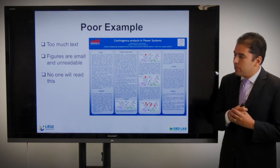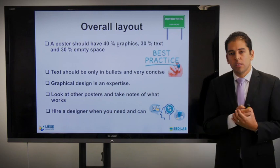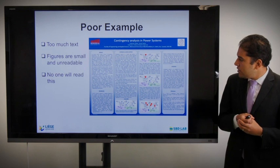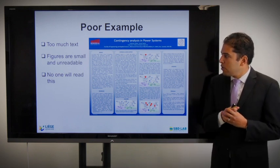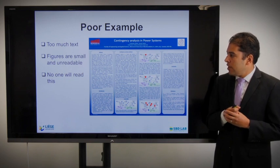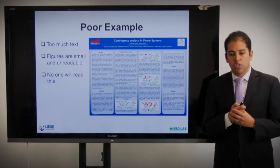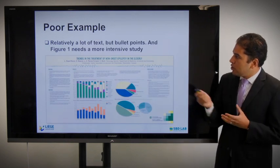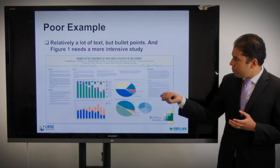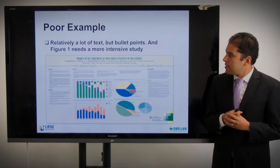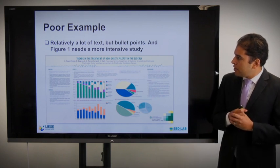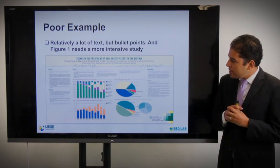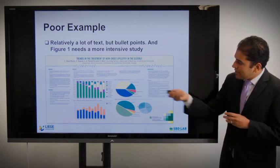This is a poor example — a lot of text, the structure is difficult to follow, graphics are very small, figures are unreadable. No one will read this poster. Another poor example: relatively a lot of text, bullet points which is good but they are very dense. Figure one needs more study. Too much information, the message is not clear, and the text is too much.